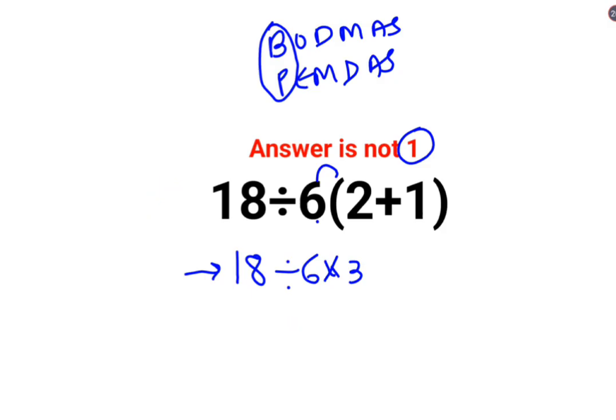Please understand, when you have division and multiplication, you need to realize both of them hold equal precedence. So in sums like these, you need to follow the rules of left to right. Whatever operation happens first on your left-hand side has to be done first.